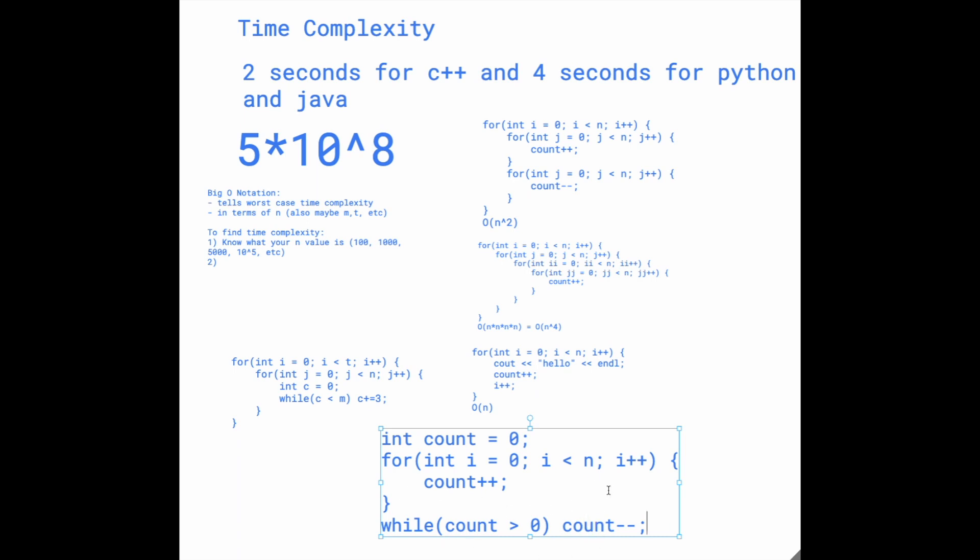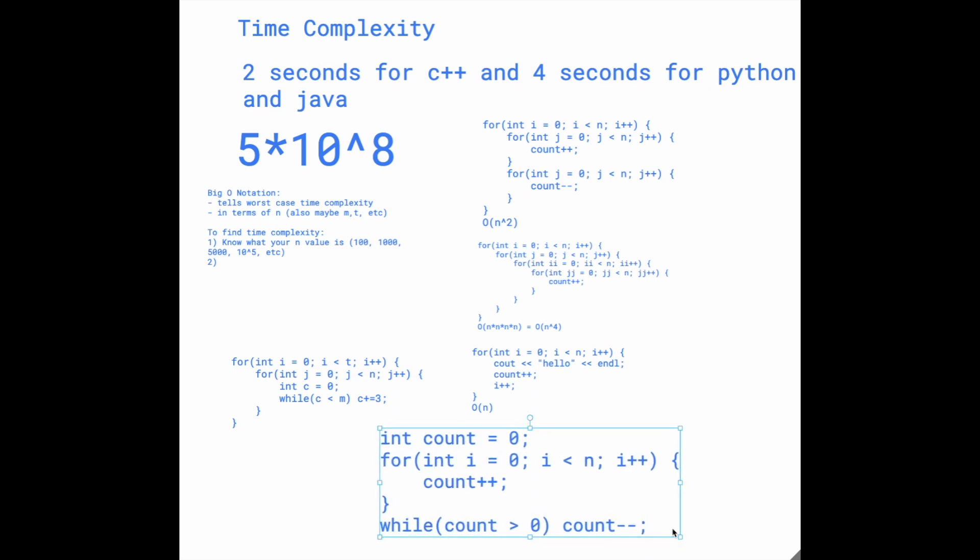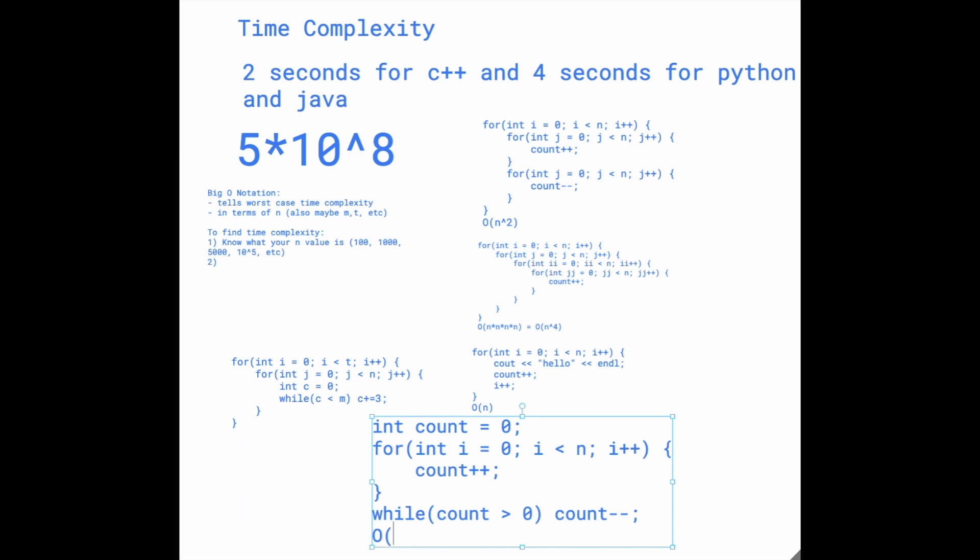The while loop is going to run roughly n times. Actually, I think it should run exactly n times, or maybe n minus one. This one would be... we have a for loop that runs n times, and then another while loop that runs n times. This is just 2n, and like I said before, this just equals O of n.